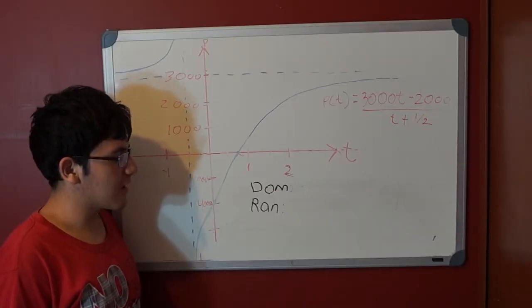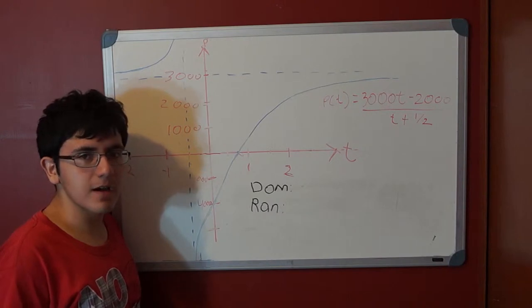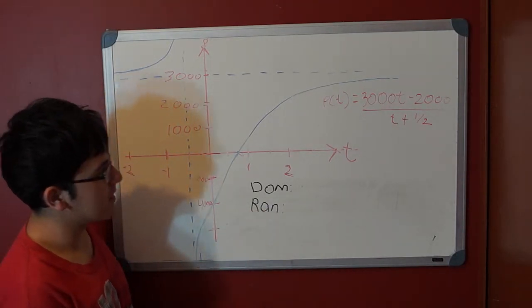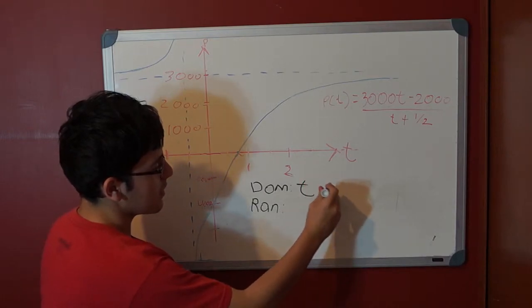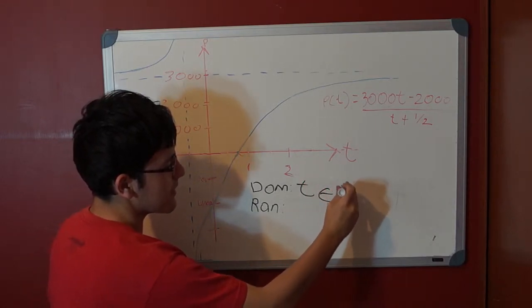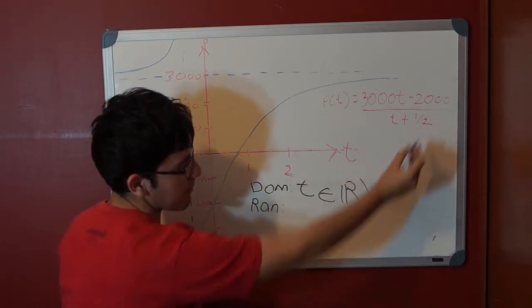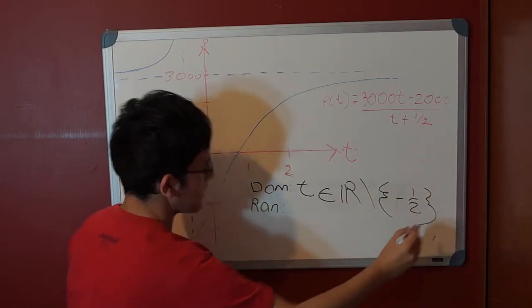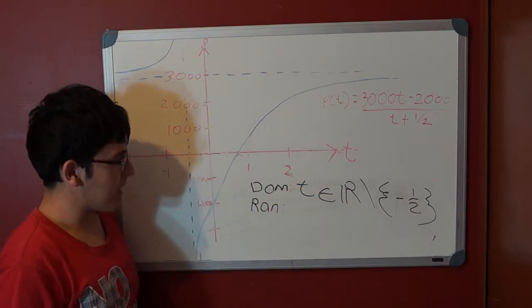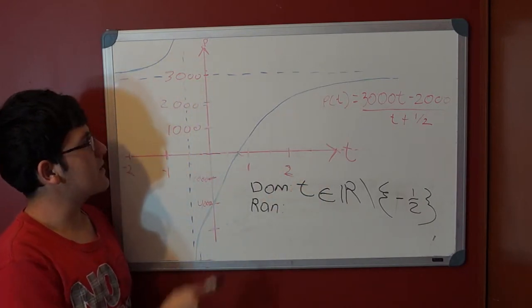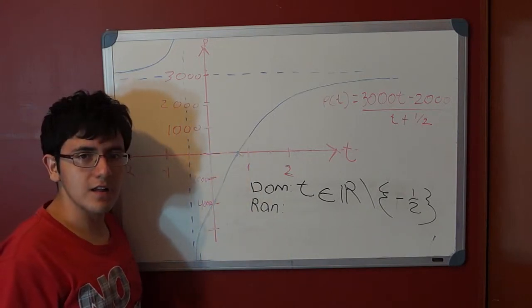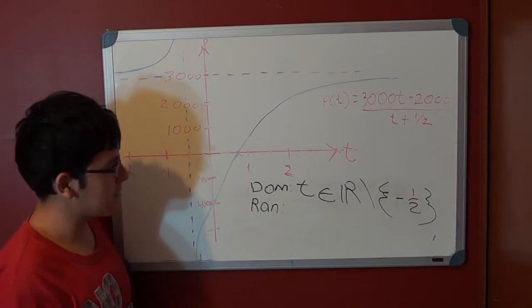Well, to get the domain and the range, we have to see the equation and the graph. The equation says that T belongs to the reals, except minus one-half. And the graph says that it never will touch the horizontal asymptote that is 3,000.